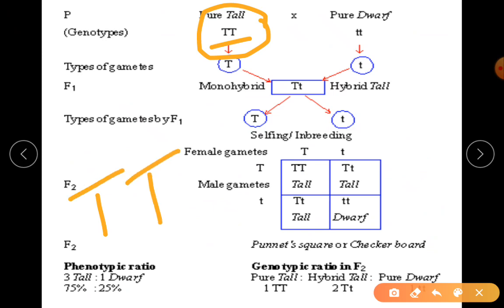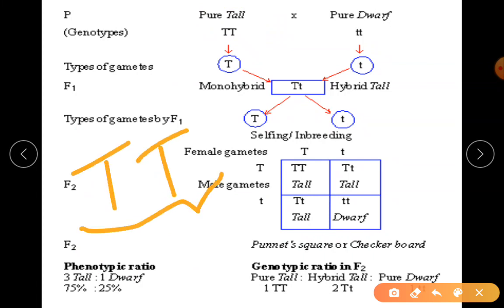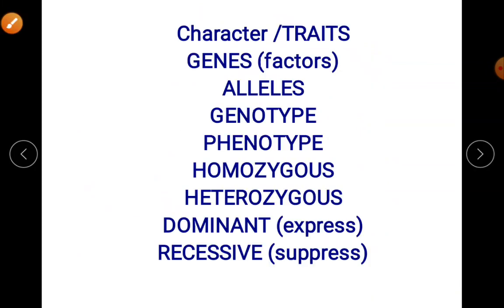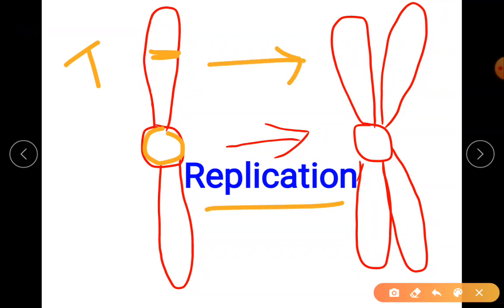There are three terms: homozygous meaning similar alleles, like T T — a single gene with similar alleles together. Mendel did not call them genes or alleles; he termed them factors. Two factors together give the character. Imagine a chromosome with a single arm and a centromere with a locus T. During DNA replication in the S phase of interphase, this T doubles.